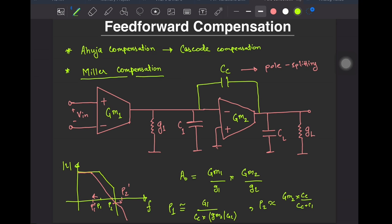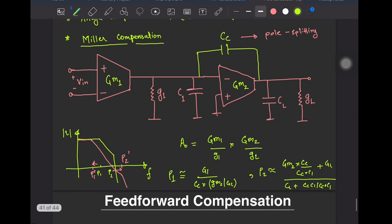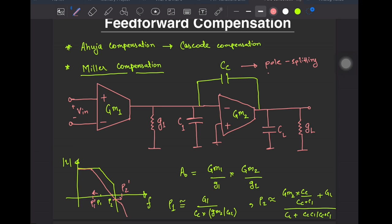For the non-dominant pole, the series of CC and C1 creates a feedback of CC over CC plus C1 times GM2, plus we also have GL as the total conductance. That is divided by CL plus the series of C1 and CC. Approximately, the non-dominant pole would lie at GM2 over CL. We also have a RHP zero, but I won't discuss that since it isn't the topic of this video. To summarize, the Miller capacitor causes pole splitting by pushing the dominant pole to lower frequencies, which indirectly imposes a restriction on the bandwidth as well.